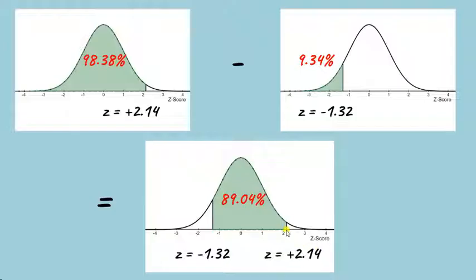And as a reminder this means that if we randomly select a score from the population it would have an 89.04% chance of falling somewhere between these two z-scores.